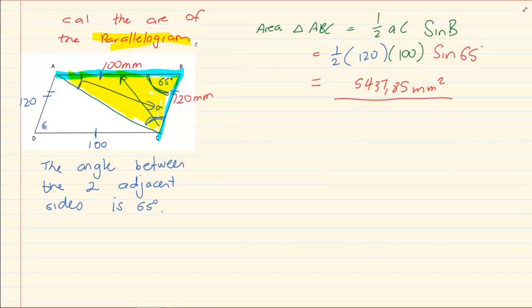The opposite angles of a parallelogram are equal. Then I know I have got the exact same triangle as triangle ABC. So all I have to do is say 5437.85 and times it by 2.